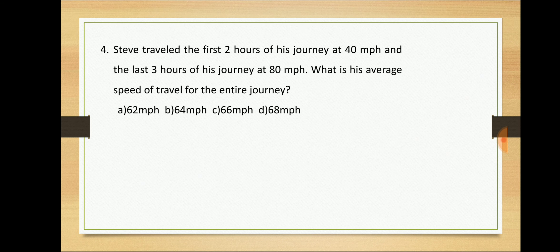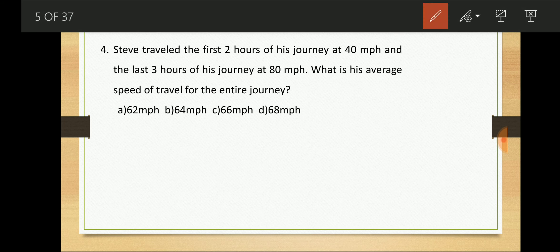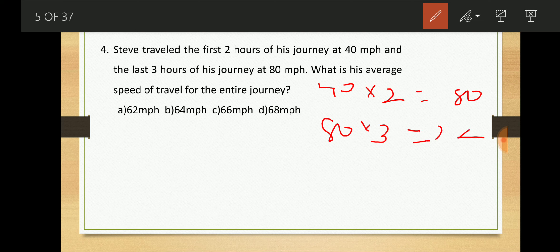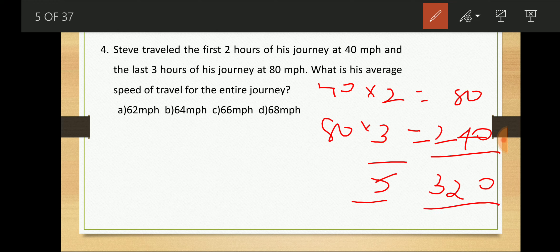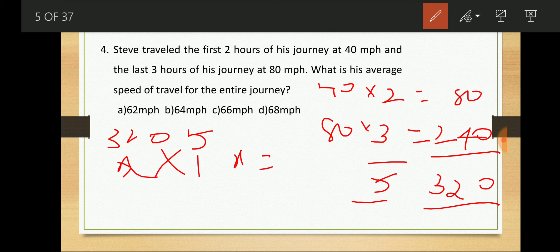Next, a very similar question: Steve traveled the first 2 hours at 40 miles per hour, and the last 3 hours at 80 miles per hour. Find the average speed. 40 into 2 = 80 miles, 80 into 3 = 240 miles. Total is 320 miles in 5 hours. Average speed = 320 divided by 5 = 64 miles per hour.